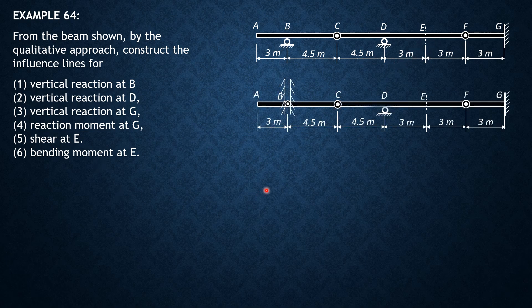First, for the vertical reaction at B, we remove the capacity of section B to resist vertical reaction. So as a result, this remains solid — a ruler on this smooth slotted joint is attached. Then we push B upward; we apply positive reaction. So this will rotate about C, and the rest is unaffected, so this portion will remain horizontal. So the influence line would look like this.